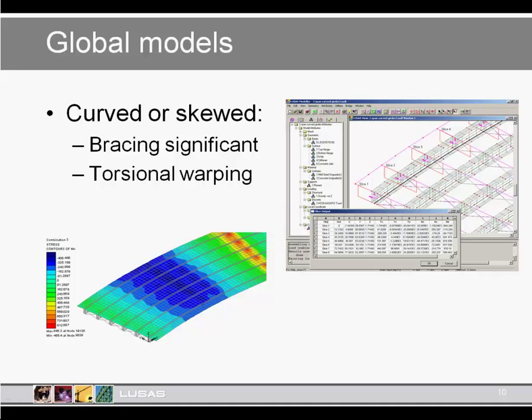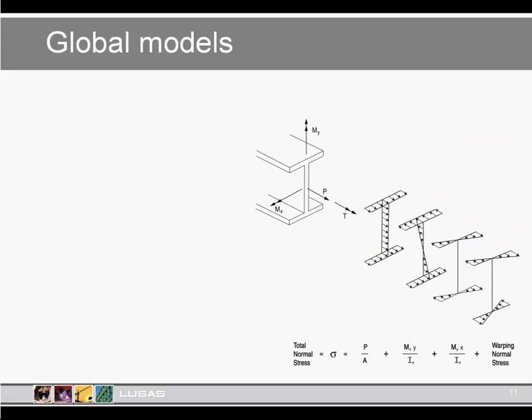Grillage modelling is not so able to pick up these effects as it's not such a rigorous method. Torsional warping is also something that we should consider. That torsional warping is illustrated figuratively here, where we have the axial components, the vertical moment, transverse moment, and obviously the warping separated out. There are guidelines on how to deal with these.